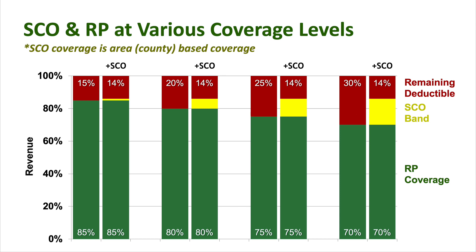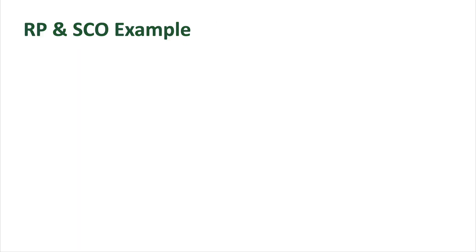One word of caution here: we saw quite a few farmers in Illinois purchase SCO last year in 2019. What I really hope I don't see is farmers reducing their RP coverages so that they can buy more SCO coverage. SCO is county coverage, which isn't typically very popular in Illinois. Last year, only about 5% of all policies were county-based policies. In this tight farm economy, I would hate to see farmers reduce their farm level coverage just so they can get more county-based coverage.